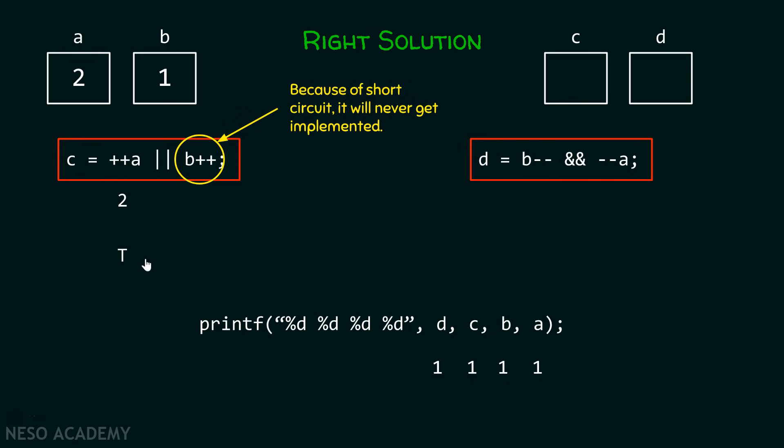b++ because of short circuit will never get evaluated. Because we know that true OR with anything is always true. It doesn't matter whether this will be false or this will be true. Therefore, implementing this particular expression does not make any sense. It will never get implemented. And hence, the final output would be true. Definitely the value contained inside c would be 1. But b will never get incremented after the completion of this expression.